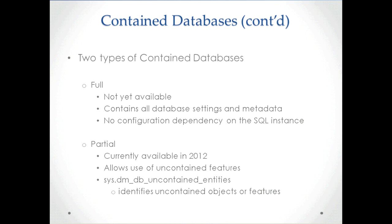There are two types of contained databases: full and partial. Fully contained databases are not available yet — only partially contained databases are available in 2012. With fully contained, there's no dependency on the SQL instance and it doesn't allow any objects or functions to cross its database boundary. With partially contained databases, uncontained features are still allowed — for example, database users can still be mapped to the server login, or you can have references in your partially contained database to tables in another database.